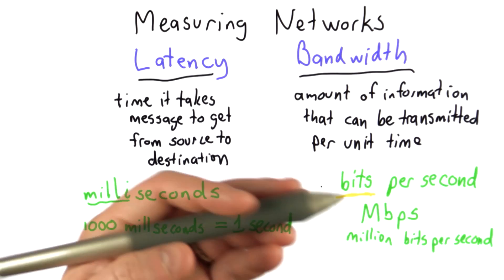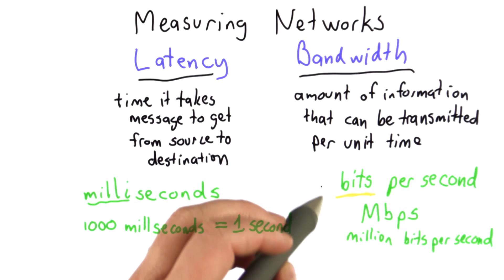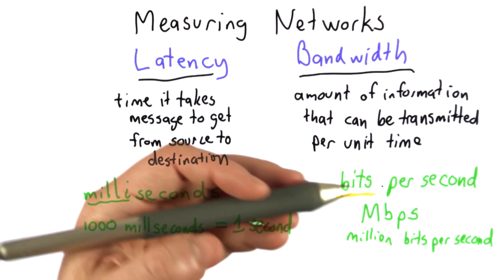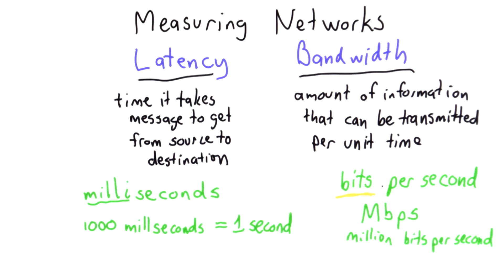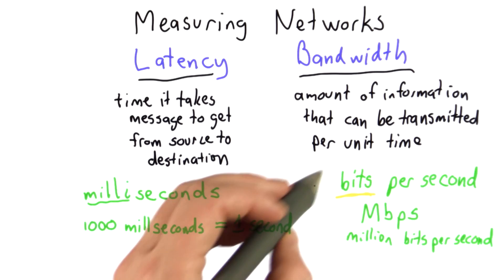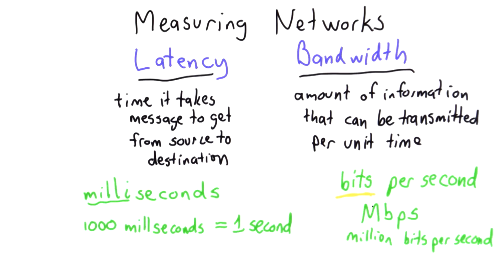In computing, we usually think of that as either a zero or a one. So that long string of zeros and ones is the information we're sending, and it could be encoding a string of text like it does in a web page. It could be encoding an image. It could be encoding a number. And to measure our bandwidth, we need to know how many bits can we send per second.